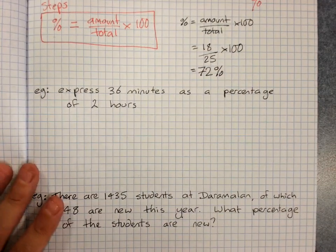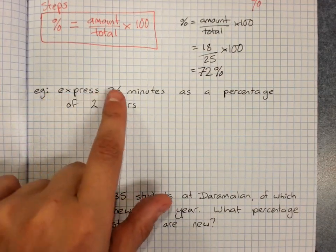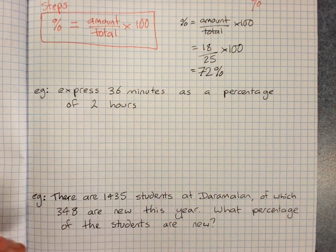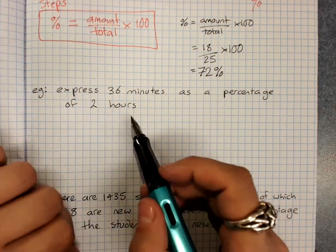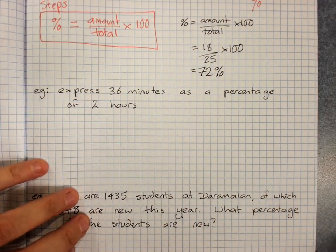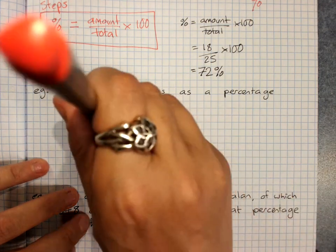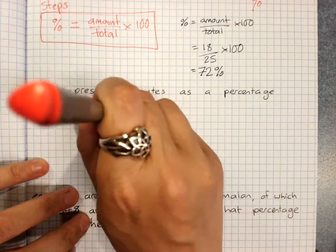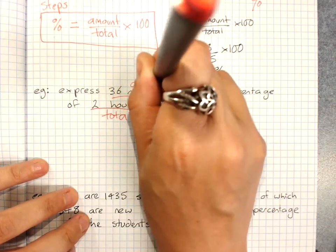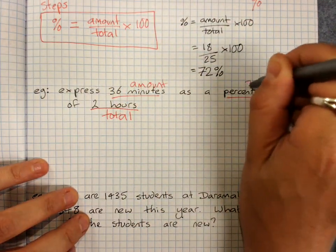Here's another type of this question: express 36 minutes as a percentage of 2 hours. So it's like you've got a two-hour test and you've done 36 minutes. What percentage of your time have you used? Now there's one tricky thing here: this is my total, this is my amount, and they've asked me to find a percentage so I know I'm using this method.